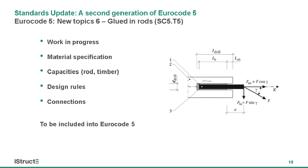Something used quite regularly these days, especially in refurbishment works, is glued-in rods or bonded-in rods. There were previous COST Actions on this, including one headed by Richard Harris from Bath University. We tried to publish guidelines on that as part of another COST Action. But even though we had this information available, there wasn't an opportunity to write it into Eurocode 5 until now. The current idea is to include this topic in the main body of EC5, though depending on progress we may produce a technical specification instead.